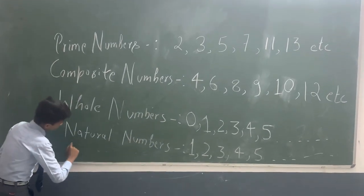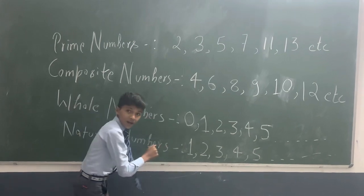After that, what is natural number? The natural number is starting from the 1 and goes to infinite.